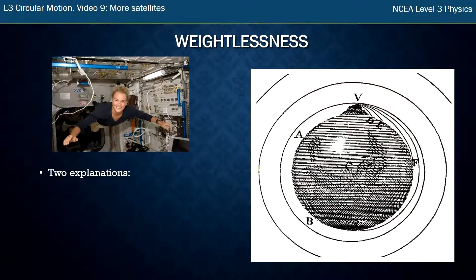There are two explanations to help understand this, and you could use any of these explanations. The first is the diagram on the right. Remember, this is Newton's idea of a satellite. He showed that if you fire something around the Earth, it falls back towards the Earth. If you get the velocity high enough, it just keeps falling around the Earth in a complete orbit.